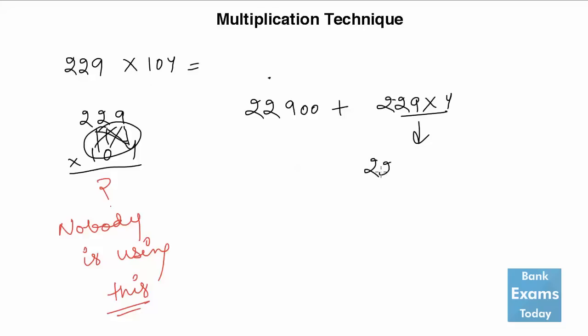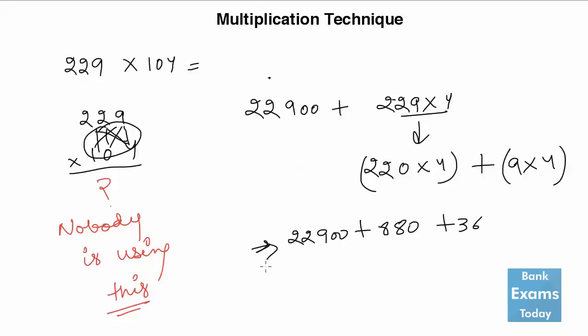220 by 4 plus 9 by 4, so it comes out to be 880 plus 36 plus 22900. So it comes out to be 23816, and that's our answer.